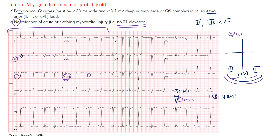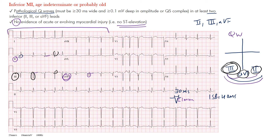No ST elevation in any of these leads, which would represent acute or evolving myocardial injury. In lead III, notice these deep Q waves — quite prominent — which may suggest that the region of the heart where lead III sits may be more infarcted. You see very small positive deflections in that region compared to lead II, likely because that area is infarcted. So it's most prominent in III, then AVF, then lead II.